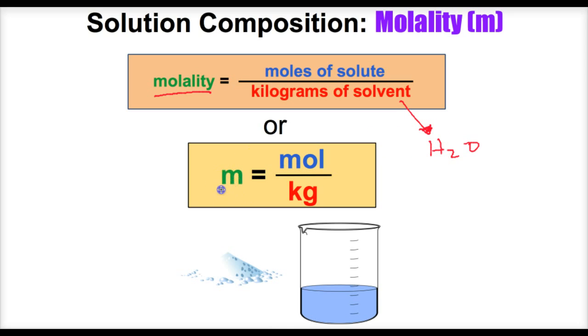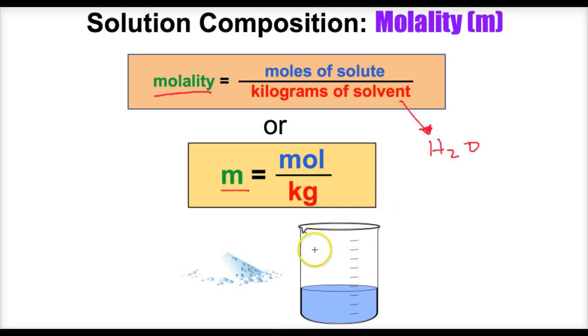So to get the molality, or lowercase m, take the moles of solute, divide it by the kilograms of water or solvent, and you should end up with the molality of that solution. So let's take a look at an example.